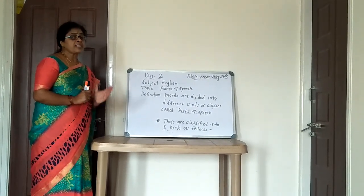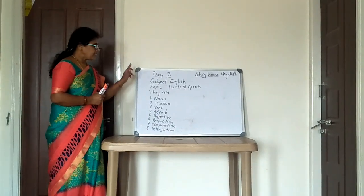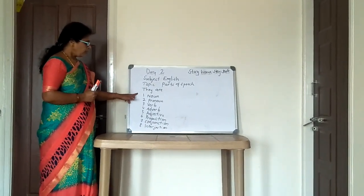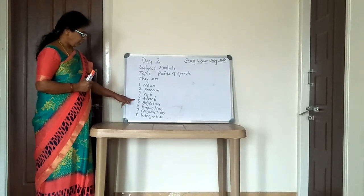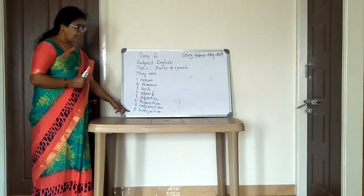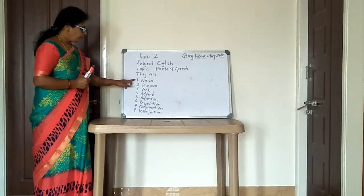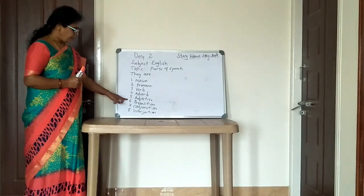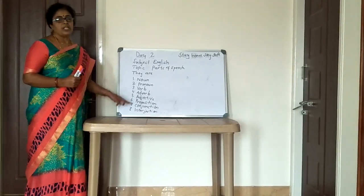The 8 kinds of parts of speech are: noun, pronoun, verb, adverb, adjective, preposition, conjunction, and interjection.